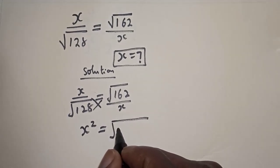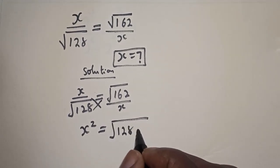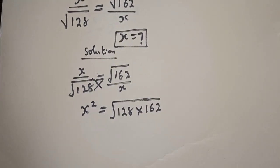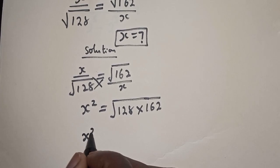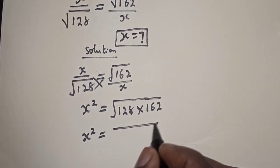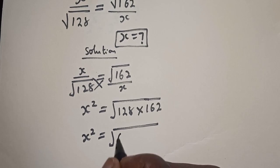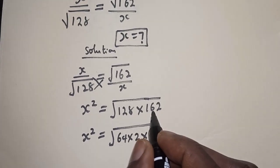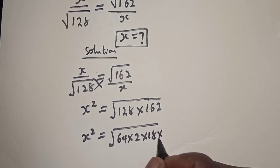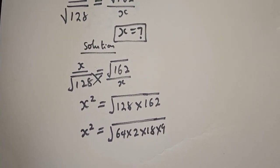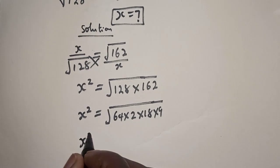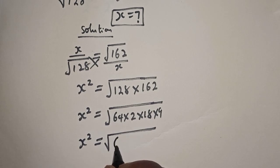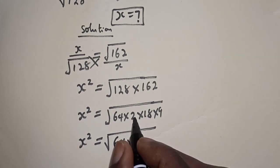Then this is x squared is equal to 128, which can be written as 64 times 2, multiplied by 162, calculated as 18 times 9. And x squared is equal to square root of 64 times 2 times 18 times 36 times 9.